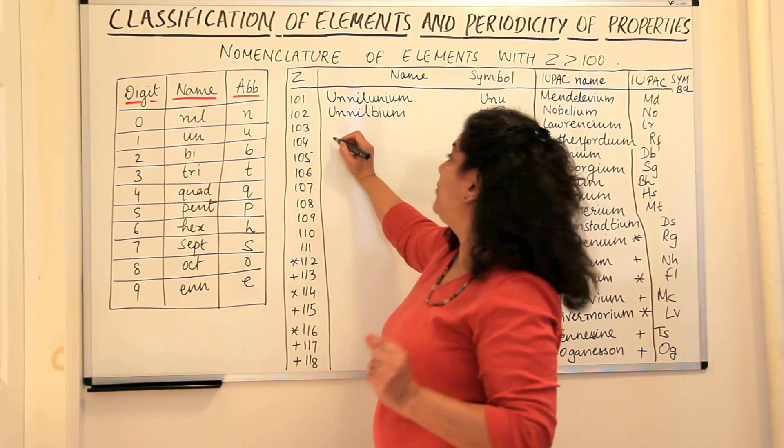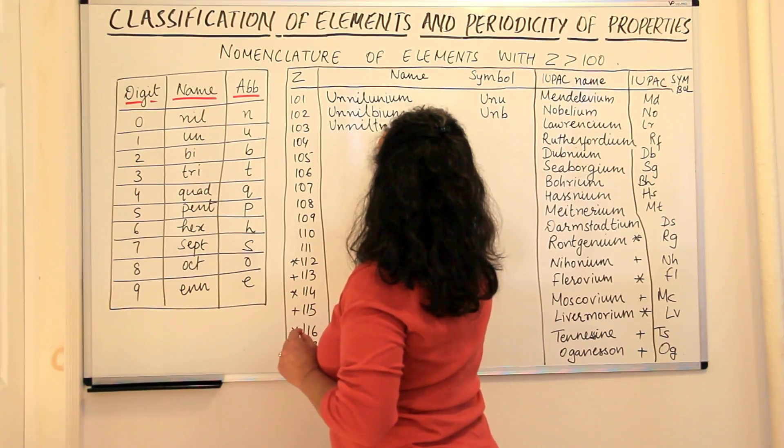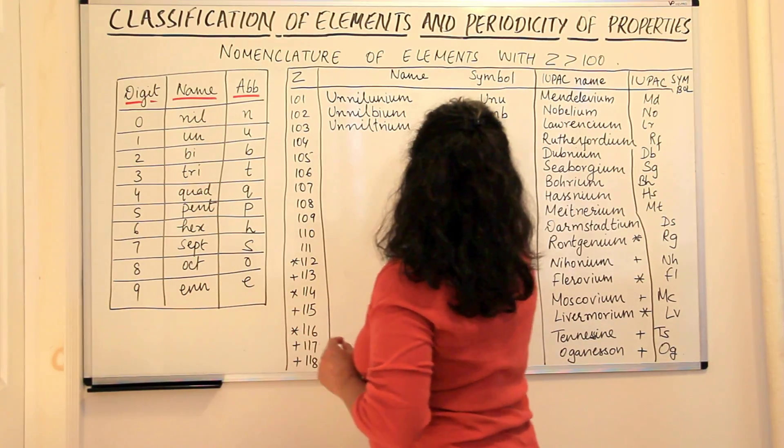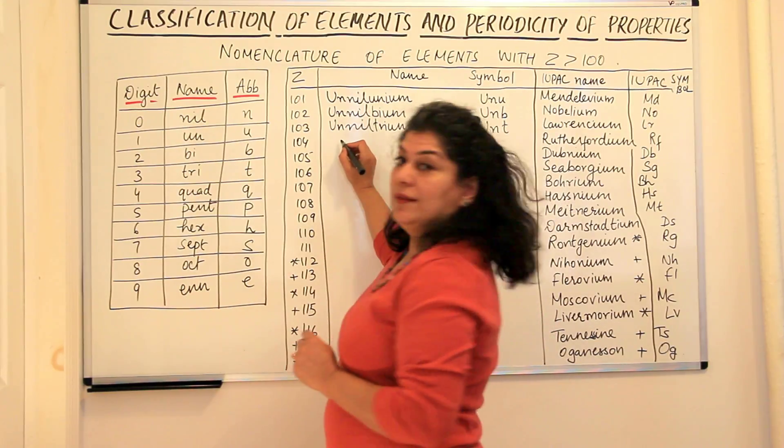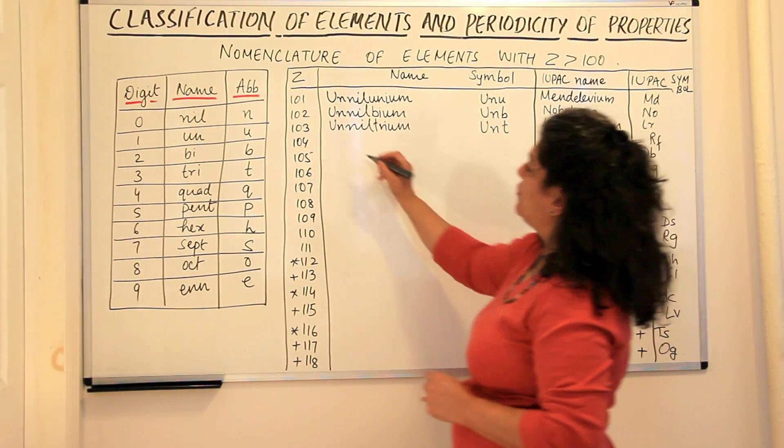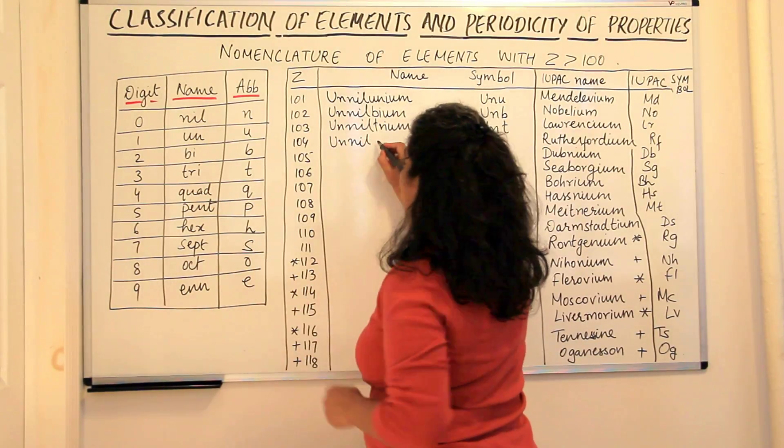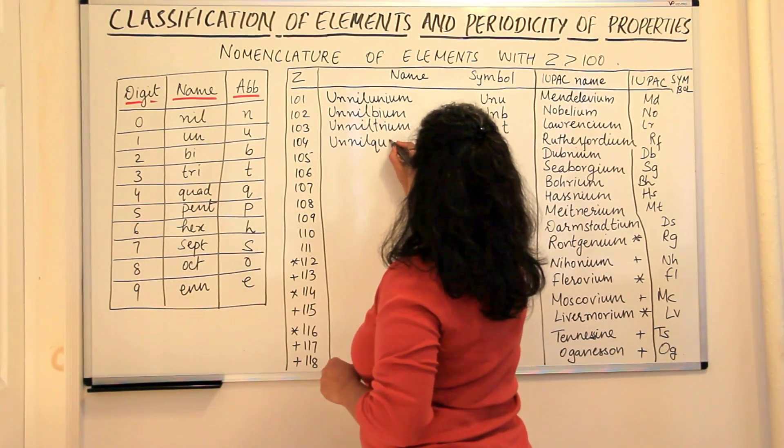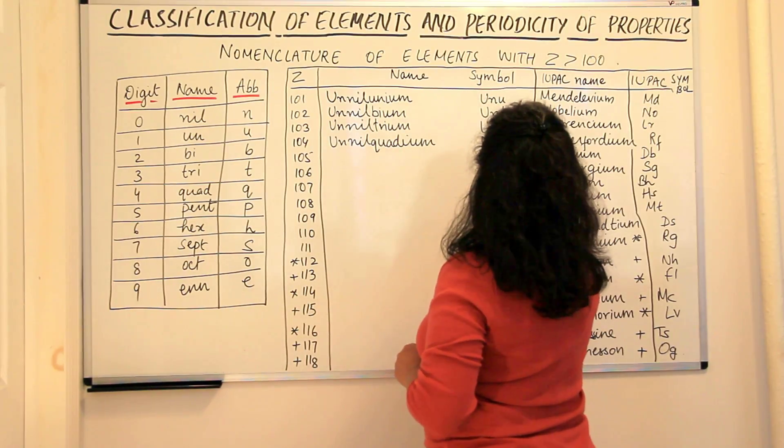Element number 103 would be unniltrium. And the symbol would be UNT. The 104th element would be unnilquadium, U-N-Q-A-D-I-U-M. Unnilquadium, UNQ.